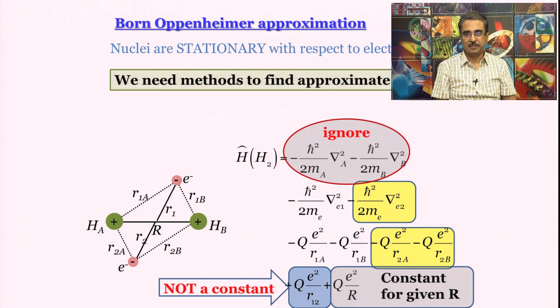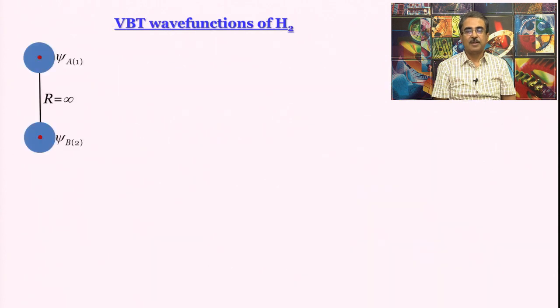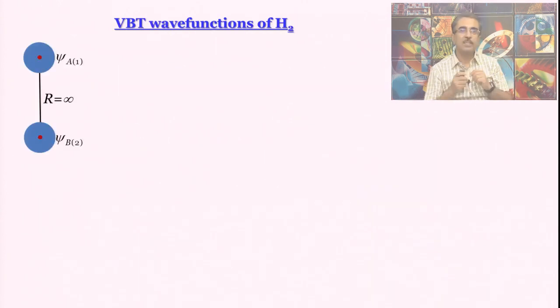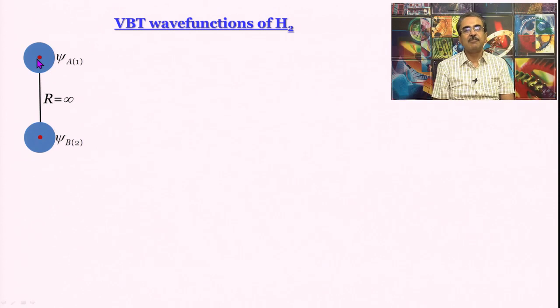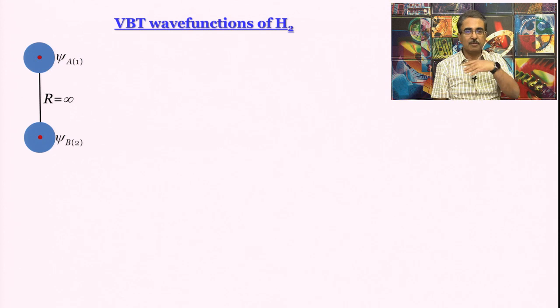This is how we do it. First of all let us think what the wave function would be when the nuclei are at an infinite distance apart. When I say infinite I do not mean millions of light years or something, about 10 angstrom is sufficient for infinity, because in this case beyond that distance the inter-nuclear interaction is really very small, we can neglect it.